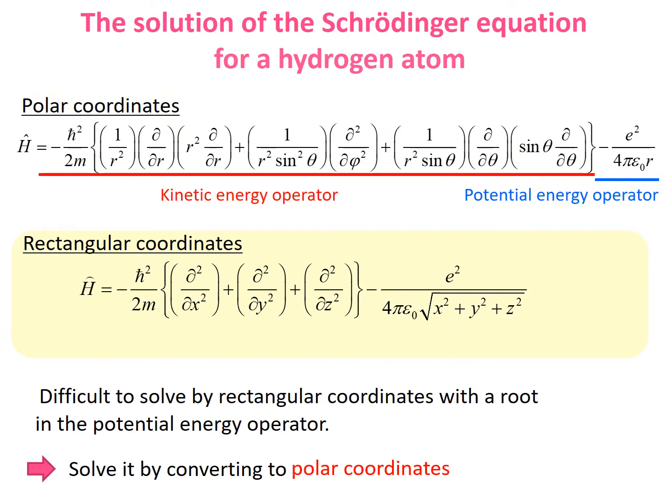The kinetic energy operator is usually written simply by using rectangular coordinates as a double partial derivative with respect to x, plus a double partial derivative with respect to y, plus a double partial derivative with respect to z.